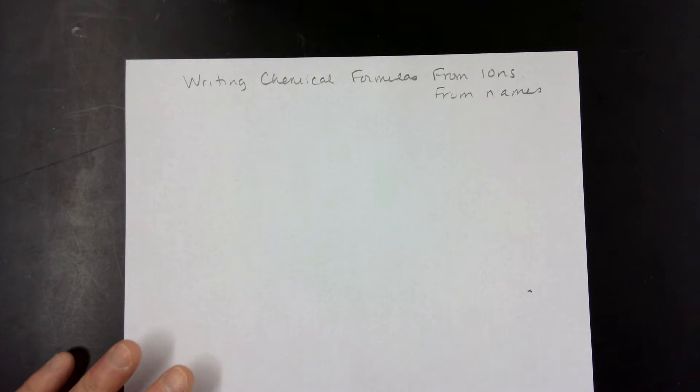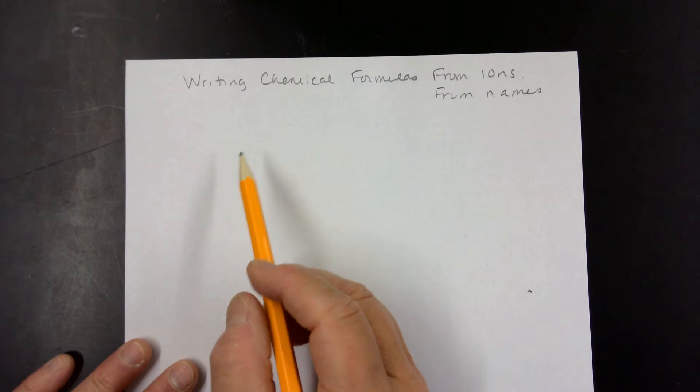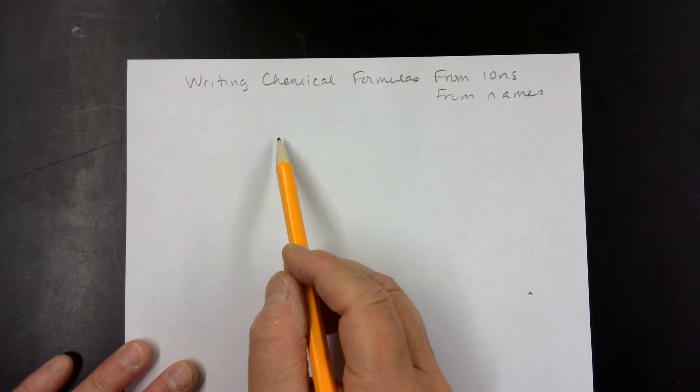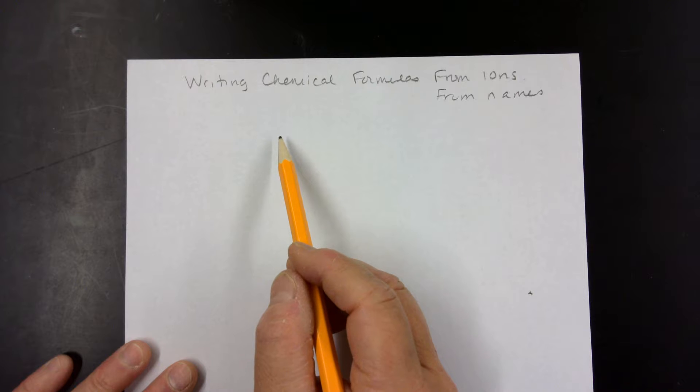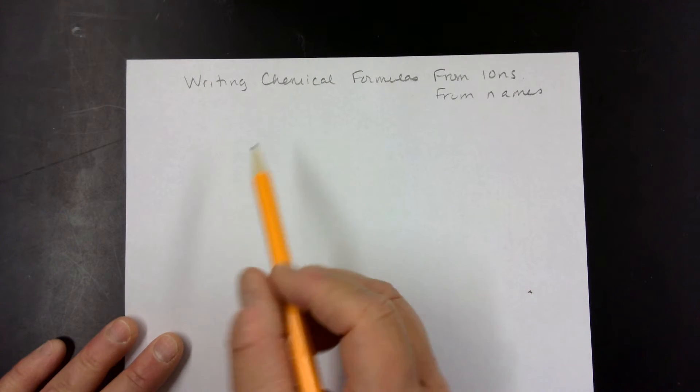Let's work through a couple of examples for how to write chemical formulas from ions and from names.